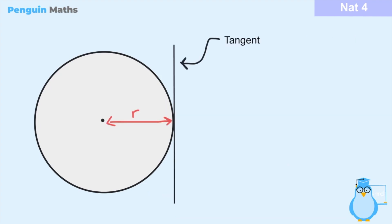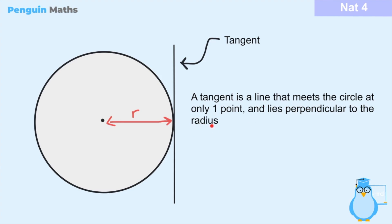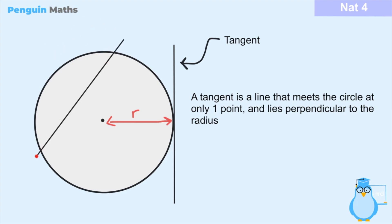The last thing we're going to look at in this lesson are tangents. Tangents are not part of a circle itself — they are actually a line — but they are very important when dealing with circles. A tangent is defined as a line that meets the circle at only one point and lies perpendicular to the radius. When the tangent comes in contact with the circle, it only meets at one distinct point and lies at 90 degrees to the radius. A line that doesn't touch the circle at all is not a tangent, and a line that touches the circle at more than one point is also not a tangent.